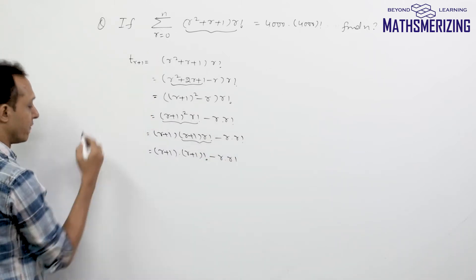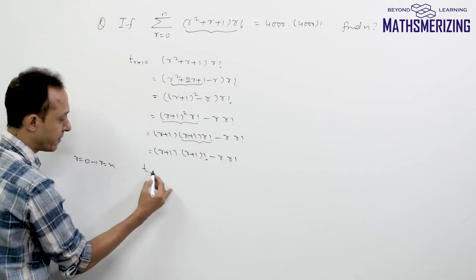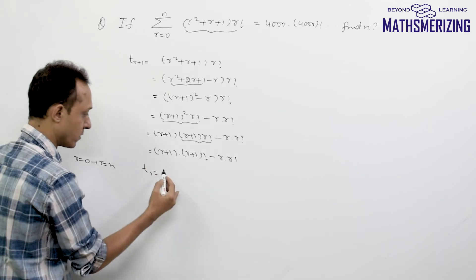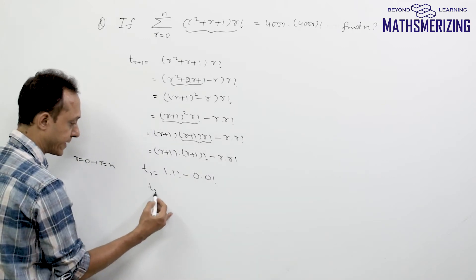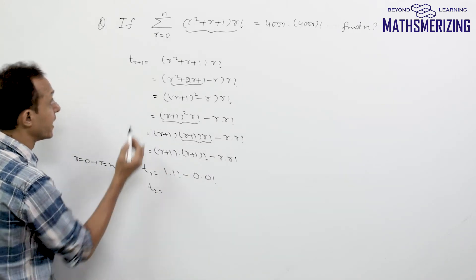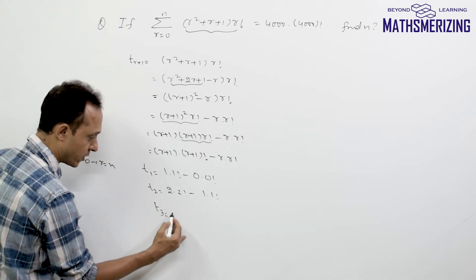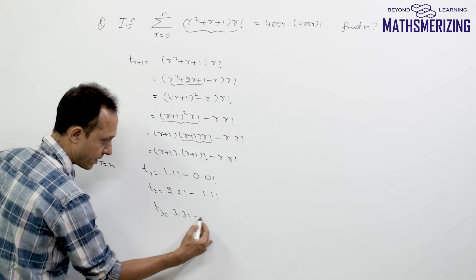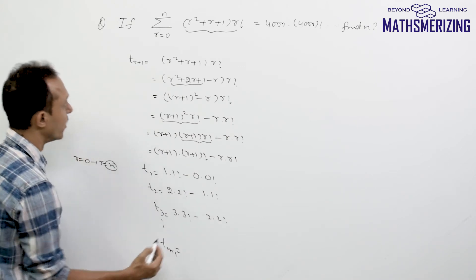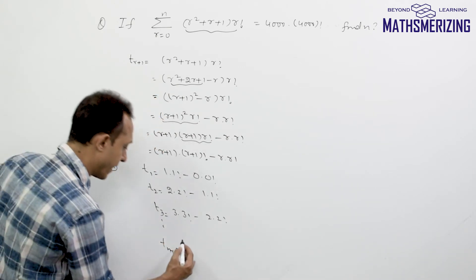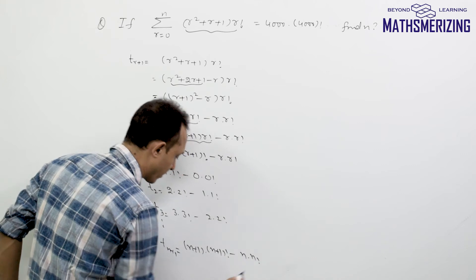Now I'll substitute r from 0 to n. For r=0: 1·1! − 0·0!, which is 1. For r=1: 2·2! − 1·1!. For r=2: 3·3! − 2·2!, and so on. Finally for r=n, the last term T(n+1) is (n+1)·(n+1)! − n·n!.